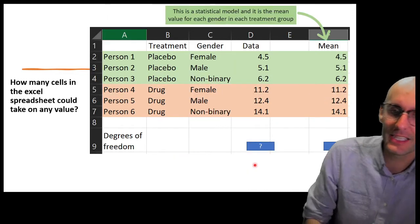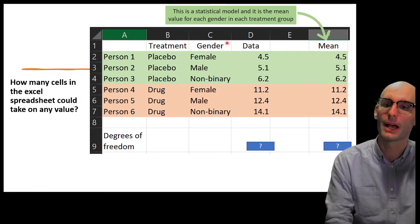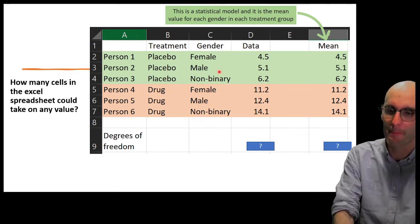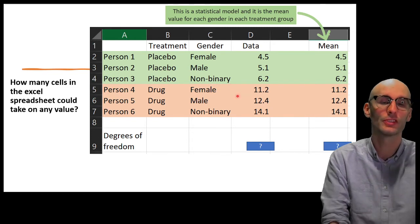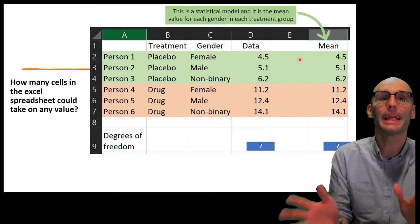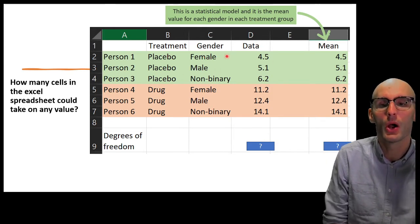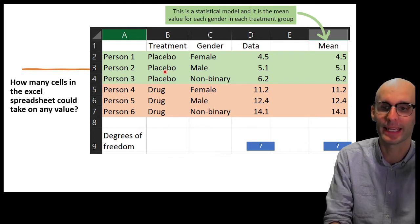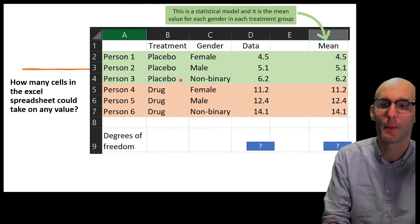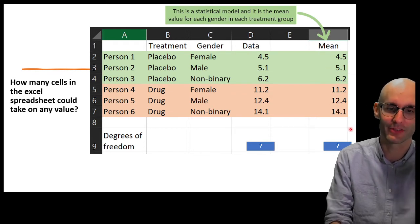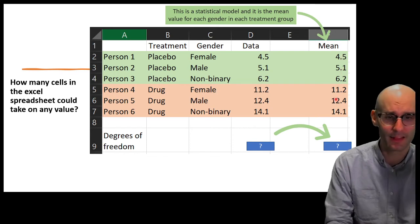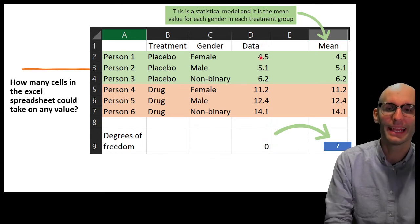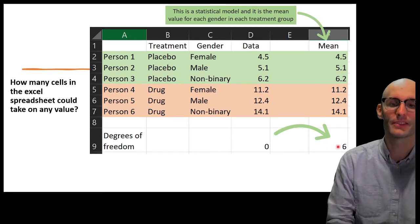Let's make this data set even more complicated. We've got treatment and now we've also got gender: female, male, and non-binary — in this study we had two persons who identified as non-binary. Now let's take the mean of the treatment and gender groups — the mean of each unique combination. So placebo female gets her own mean, placebo male gets his own mean, placebo non-binary gets their own mean. We've now got six cells that could all theoretically vary on the statistical model side, and the degrees of freedom of the data is zero, and the degrees of freedom of the model is six.